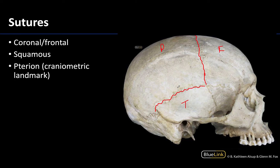The squamous suture is a much flatter type of suture. It's almost like the temporal bone was kind of pushed into place over the parietal bone so it will appear a lot flatter in terms of its location. There is one craniometric landmark I want to note here, basically where you have the meeting point of four different bones: the parietal bone, the frontal bone, the temporal bone, and the greater wing of the sphenoid bone — where these meet is the craniometric landmark referred to as pterion.